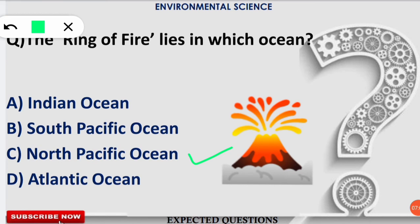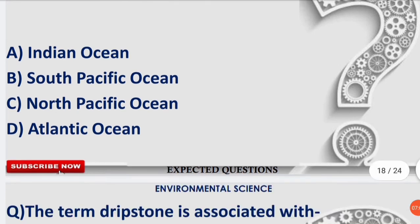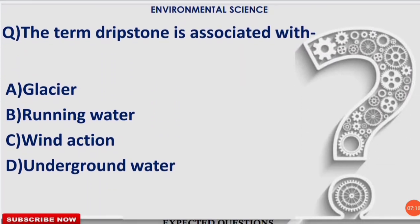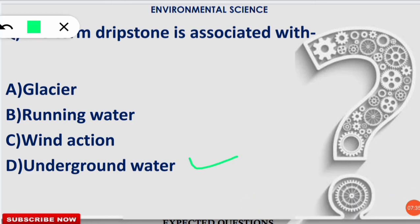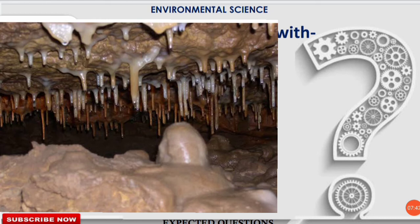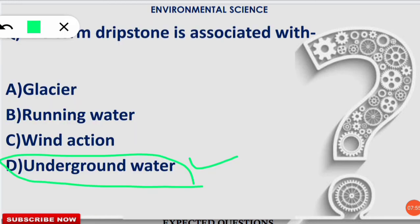The next question: the term 'dripstone' is associated with which of the following options? The correct answer is option D. The term dripstone is associated with underground water. As you can see in the picture, dripstone is formed as underground water drips from the ceiling of a cave. It is mostly located inside caves, where underground water drips and leaves behind deposits of calcite — an ionic salt of calcium carbonate.